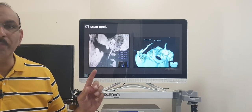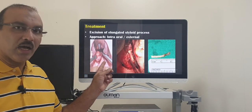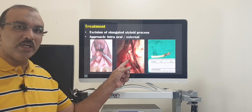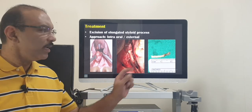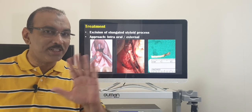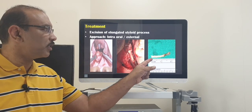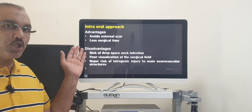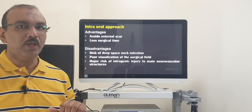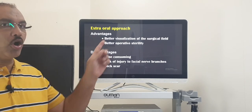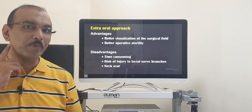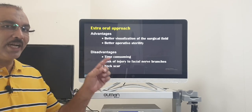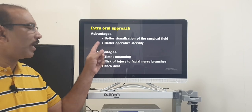For surgery, there are two approaches. One is the intraoral approach, where we remove the tonsil on that particular side, expose the styloid process, and remove only the extra length — not the whole styloid process. The second is the extraoral approach, where we make an external incision and approach the styloid process to remove the extra length. Both approaches have their own advantages and disadvantages.